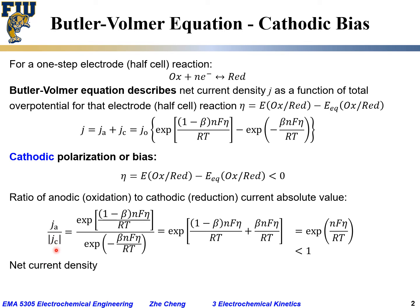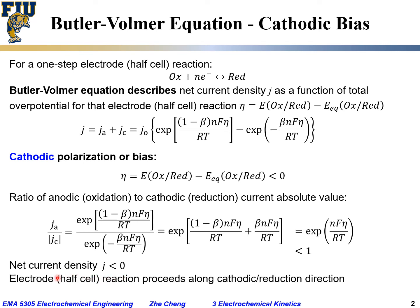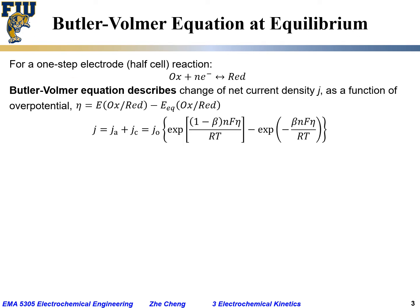Since |j_a| < |j_c| and j_c is negative, the net current density j = j_a + j_c is less than zero. The overall reaction proceeds in the cathodic or reduction direction — OX combines with electrons to form the reduced species (Red). This is the cathodic bias case: η < 0, and the overall reaction goes through the reduction process.